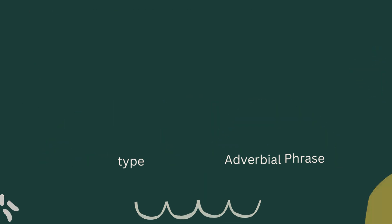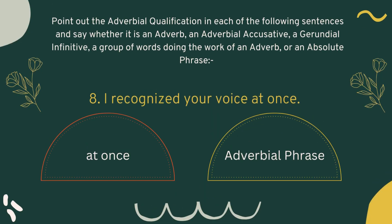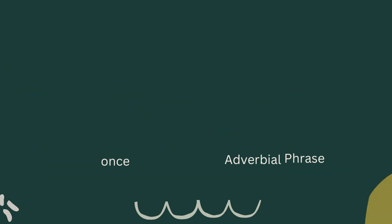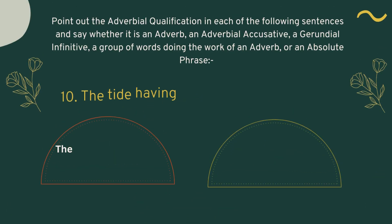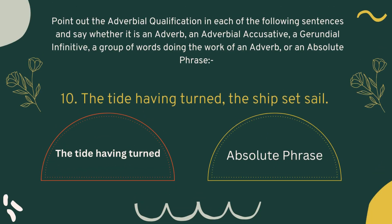Number seven: 'This book is printed in clear type.' 'In clear type' is the adverbial qualification and this is an adverbial phrase. Number eight: 'I recognize your voice at once.' Here we have 'at once' as the adverbial qualification and this is an adverbial phrase. Number nine: 'He helped a lame dog over a stile.' Here 'over a stile' is the adverbial qualification and this is an adverbial phrase.